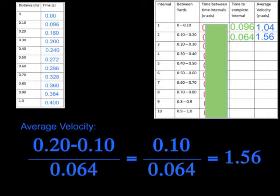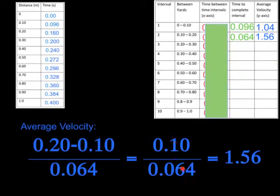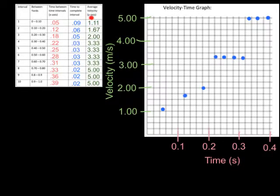For the next interval, from 0.1 to 0.2 meters: I take the larger value 0.2 minus the smaller 0.1, giving 0.1 meters. I divide by the time interval, which is 0.064, and get 1.56 meters per second, which goes right here. Again, your values will differ from mine — some may be the same, some different. Use the values you actually have, not the ones I'm showing.